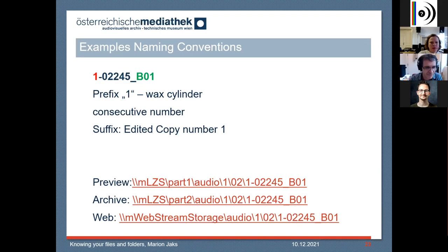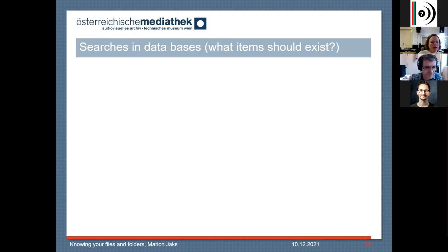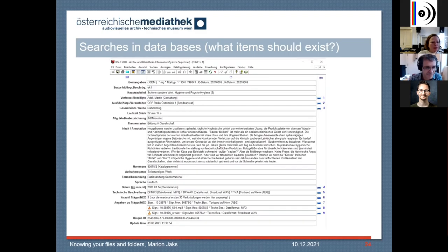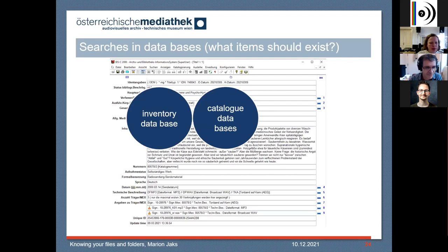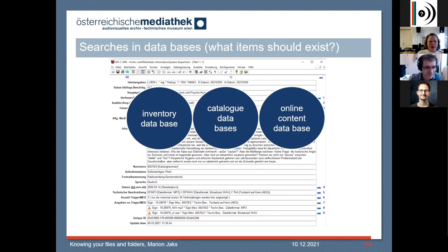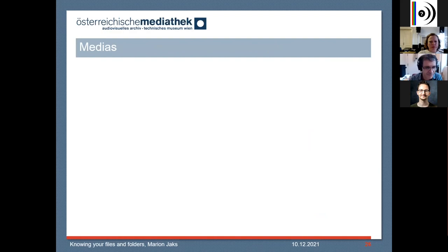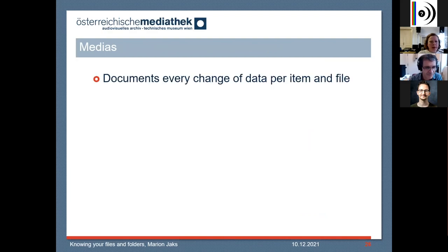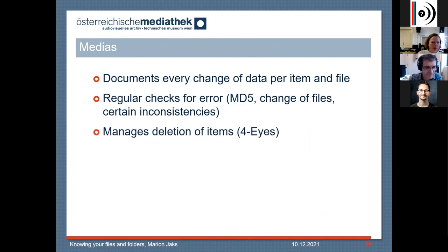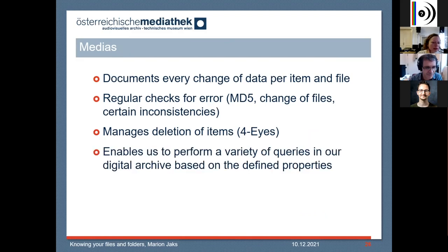When all this data is collected, we also search our databases and ask them what items should exist on our digital archive. We work with several databases: an inventory-based database, a catalog database, and an online database. In the end, all the data collected is matched to our set of rules. Medias also has some additional features: it documents every change of data per item and file, it regularly checks for errors and makes MD5 checks. We manage deletion through it using a four-eyes principle. And where I think the main power is, is that it enables us to perform a variety of queries over our digital archive based on the defined properties.